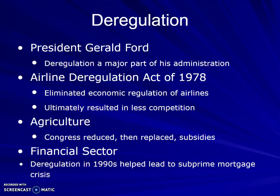We move forward into President Ford, and further on into Reagan, with deregulation — moving away from a lot of that federal control. The Airline Deregulation Act of 1978 eliminated the economic regulation of the airlines, which ultimately resulted in less competition. Within agriculture, Congress reduced and then replaced subsidies. In the financial sector, there was deregulation in the 1990s, and that actually helped lead us into the subprime mortgage crisis in 2007.